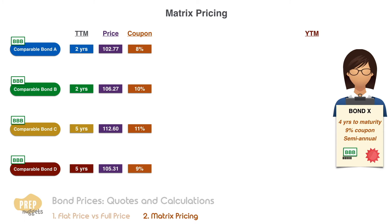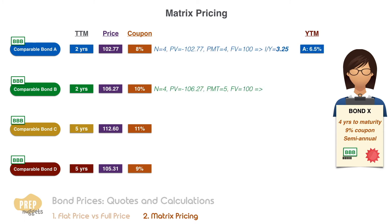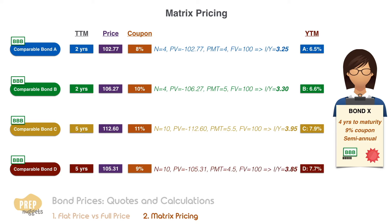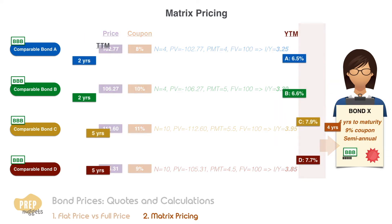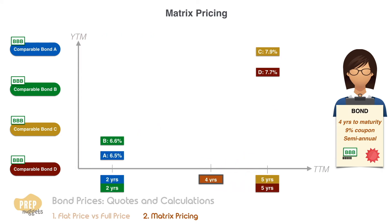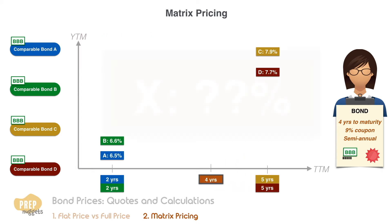Using the discounted cash flow method, we get a yield to maturity of 6.5% for bond A, 6.6% for bond B, 7.9% for bond C, and 7.7% for bond D. The key is to use the rates of comparable bonds to estimate the market discount rate for the bond we're interested in. As we know, the discount rate tends to increase with time to maturity as there is a maturity risk premium. Our bond of interest has four years to maturity, and none of these comparable bonds have four years to maturity, but we can use their yields to estimate it.